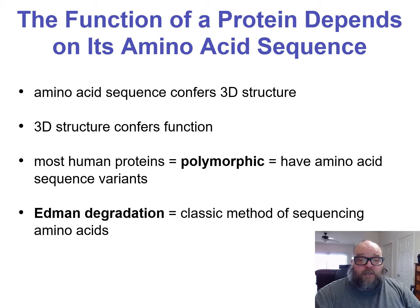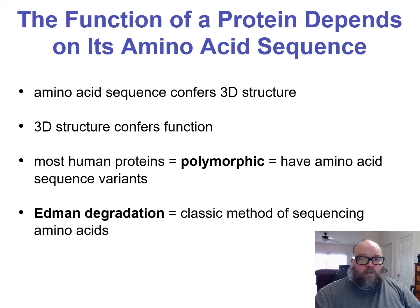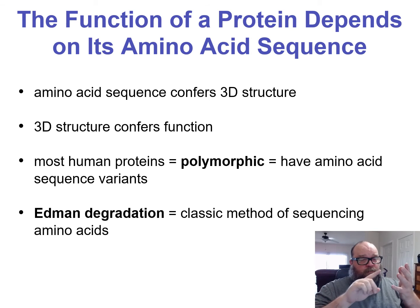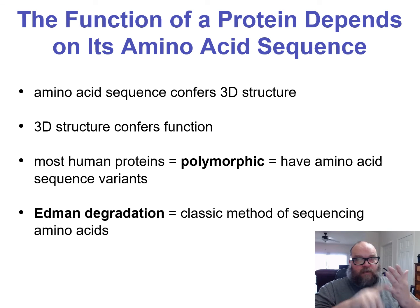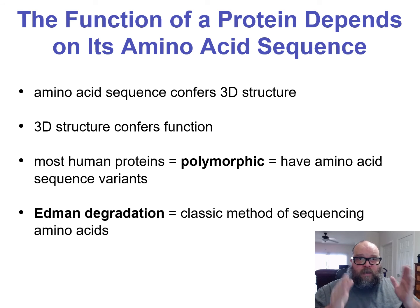Shape dictates function. The overall shape of a protein is going to be determined starting at the primary structure. Different amino acids strung together are going to form different secondary structures — some are going to form an alpha helix, some a beta sheet — and how they're strung together gives you different sequences of alpha helices, beta sheets, and loops. But it all starts at the primary.